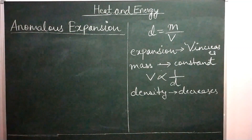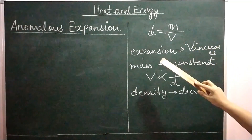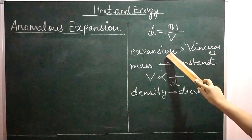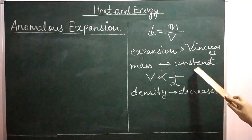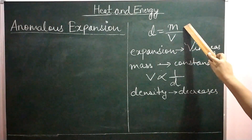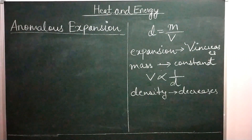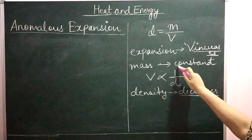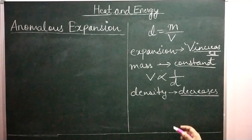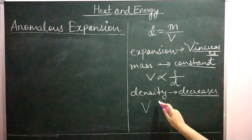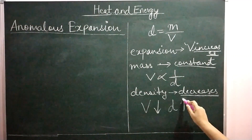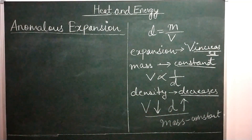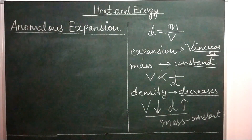We know that density is mass divided by volume. When you supply heat to any substance, the volume increases because it expands, but the mass remains constant. So as per this relationship, if mass is constant then density and volume are inversely proportional to each other. If the volume of a substance is increasing then the density will decrease. Similarly when the body contracts, the volume decreases and density increases. That is the theory of expansion and contraction.